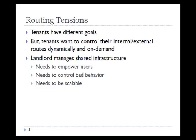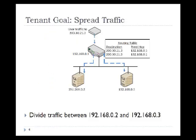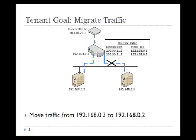The routing intention inside the data center is as follows. Tenants have many different goals, but ultimately they want to be able to control routes dynamically and on demand. The landlord managing the shared infrastructure wants to empower the user while controlling any bad behavior. An example tenant goal is to spread traffic between two servers, or to migrate traffic by moving it from one server to another.